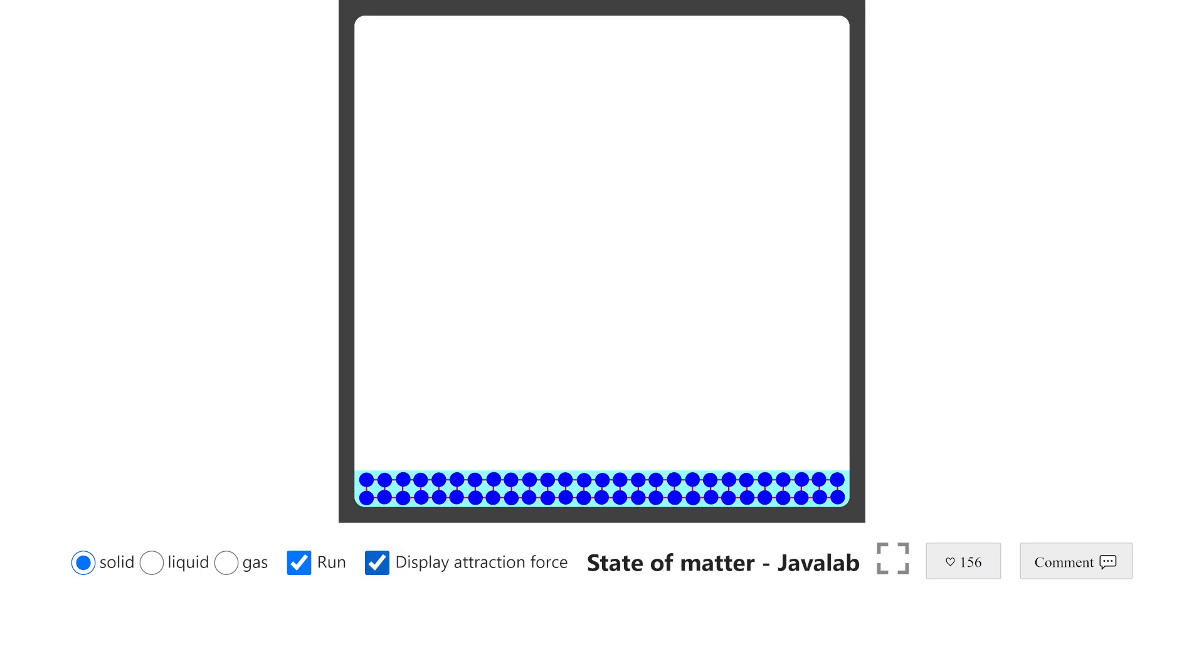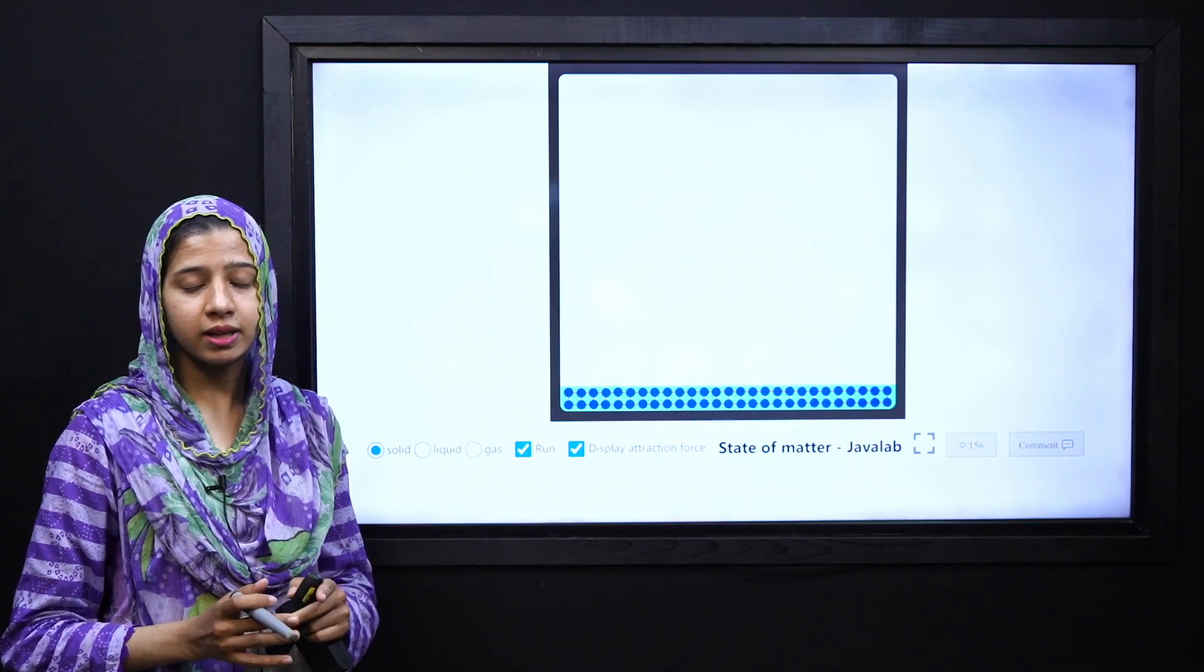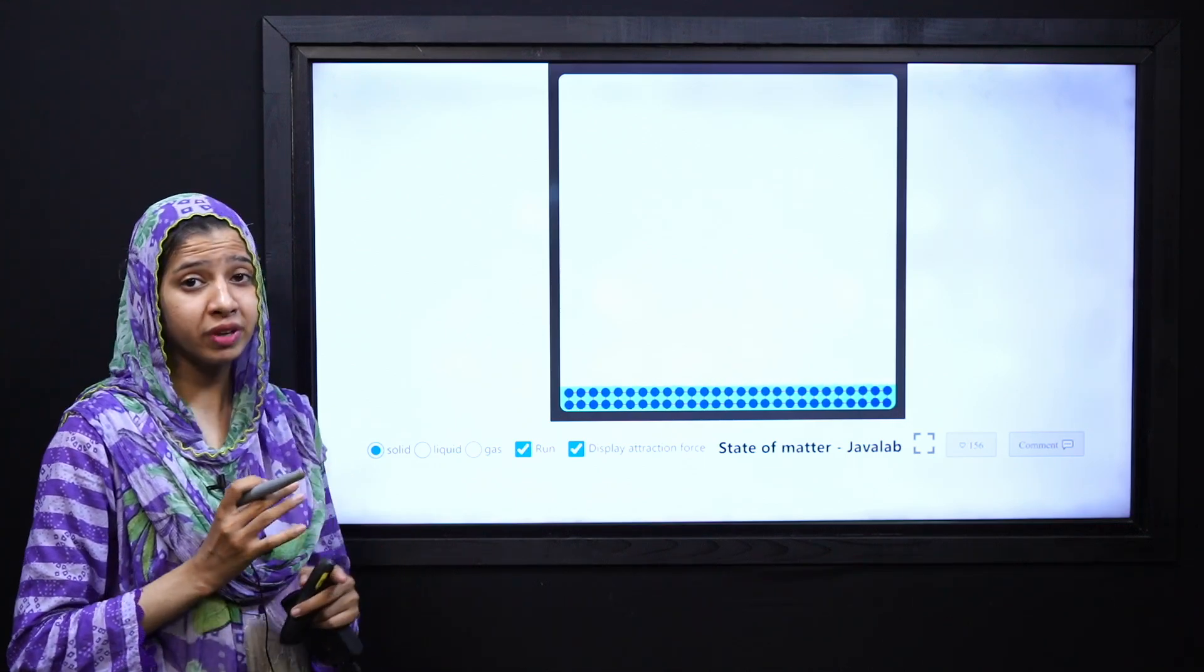In the simulation, you can see solids have a fixed shape and volume. If you look at it, the red color lines in the middle are showing forces of attraction. So solids have very strong forces of attraction and these forces are responsible for keeping a fixed shape.